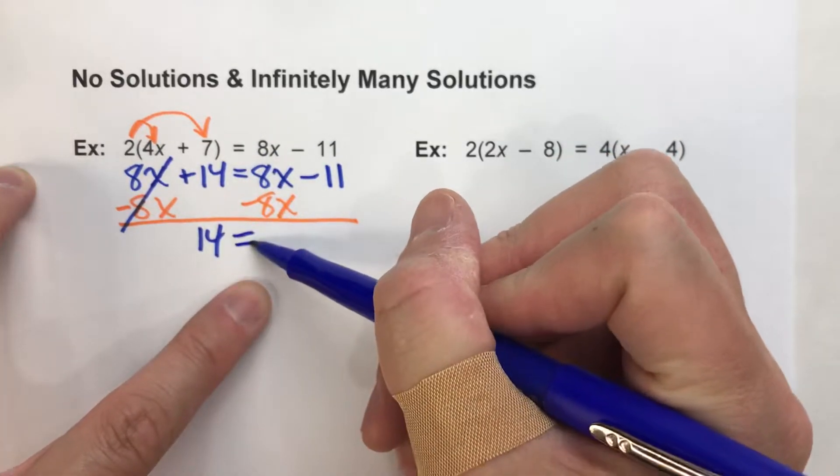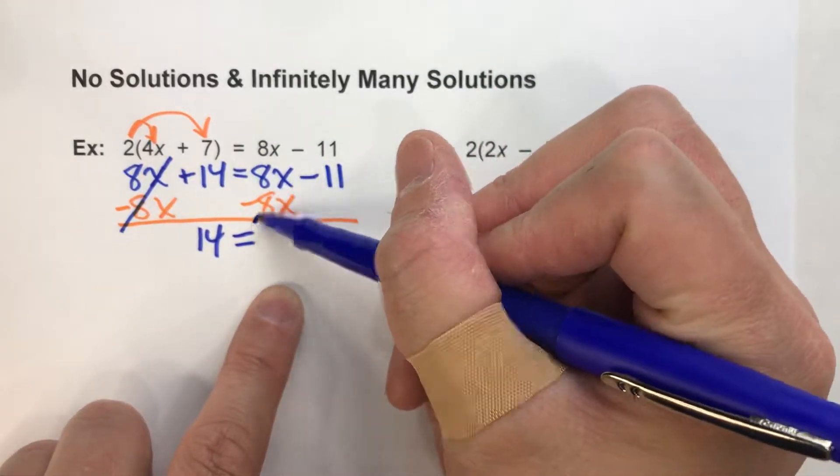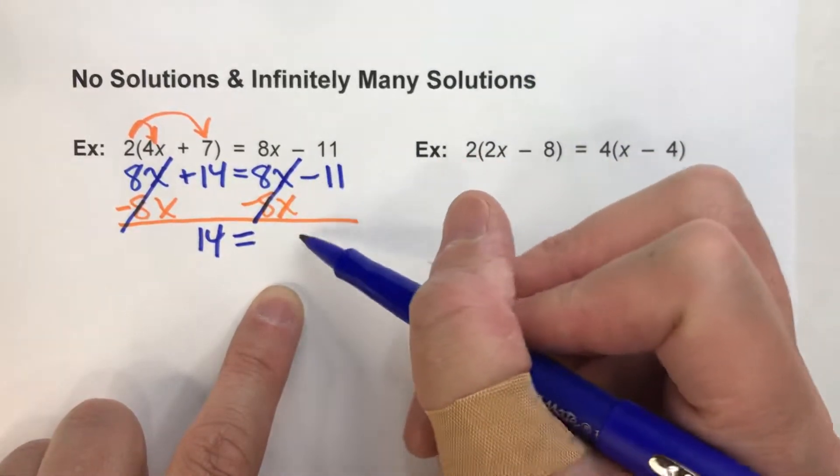I'll drop down my equal sign. And on the other side, 8x minus 8x, they undo each other. And all that's left over here is negative 11.